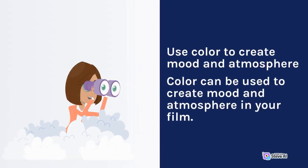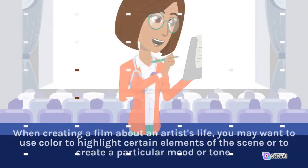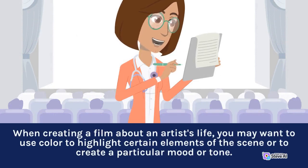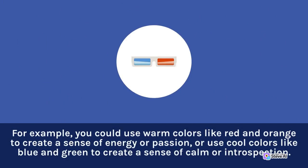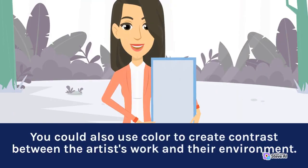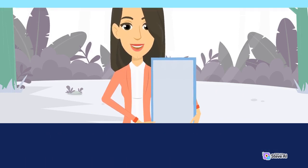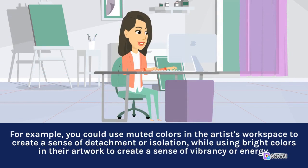Use color to create mood and atmosphere. Color can be used to create mood and atmosphere in your film. When creating a film about an artist's life, you may want to use color to highlight certain elements of the scene or to create a particular mood or tone. For example, you could use warm colors like red and orange to create a sense of energy or passion, or use cool colors like blue and green to create a sense of calm or introspection. You could also use color to create contrast between the artist's work and their environment — for example, using muted colors in the artist's workspace to create a sense of detachment or isolation.